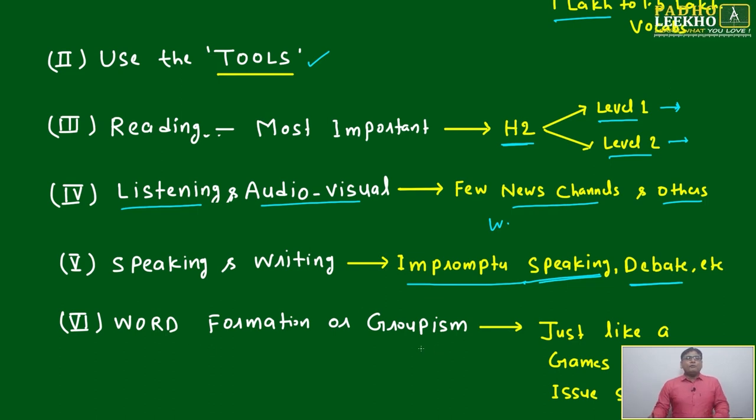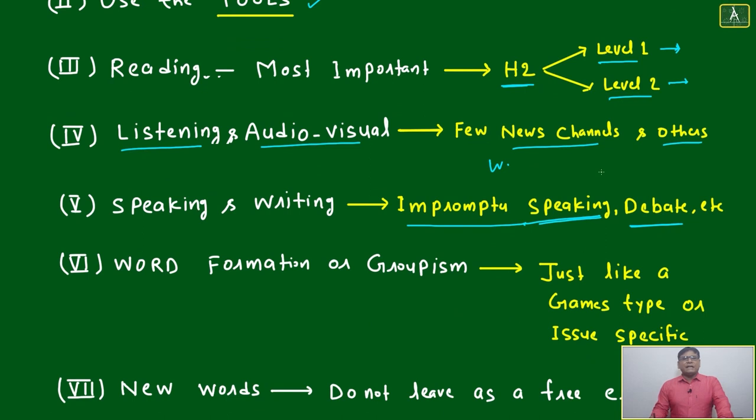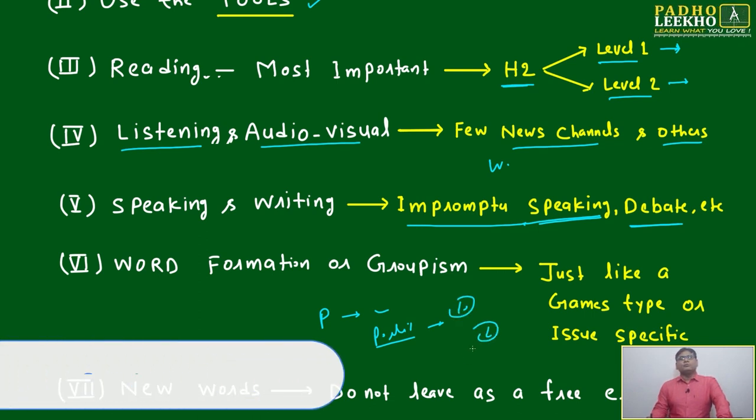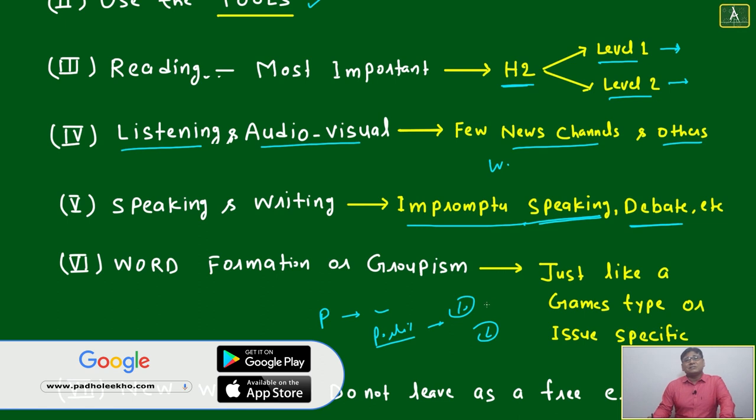Word formation or groupism - just like a games type I told earlier. Word starting with P - write 20 words. Pick one word like politics. How many different words from politics can be created? Try to write 10 different words from politics. Take two minute time, don't take 10 minutes.